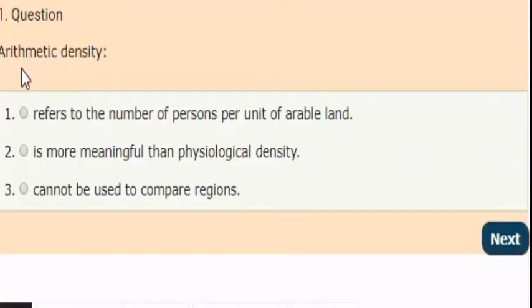First question: arithmetic density. First option: refers to the number of persons per unit of arable land. Second: it is more meaningful than physiological density. Third: it cannot be used to compare regions. The correct answer is option 1. Arithmetic density refers to the number of persons per unit of arable land.